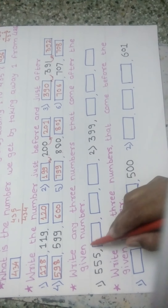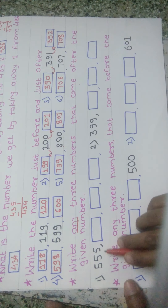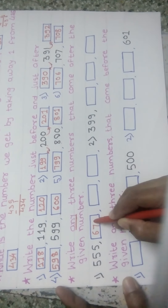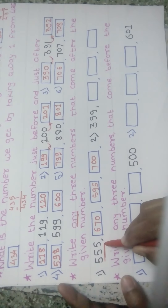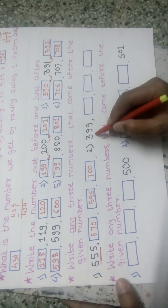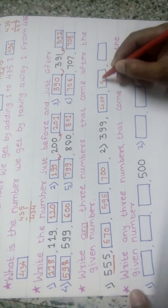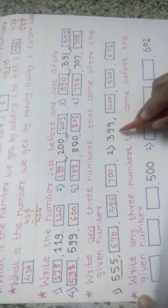Write any 3 numbers that come after the given number. Here we have to write any 3 numbers. We do not need to write numbers in series. The number is 555. We write 670, 595, 700 — any 3 numbers after 555. Next is 399. After 399, we write any 3 numbers: 400, 520, 672. It is not compulsory to write the numbers in series.